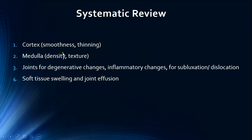Moving to the systematic review of the radiograph, we look at the following: first, we assess the cortex for smoothness and any thinning, as thinning can be seen in osteopenia. Then we look at the medulla for density and texture, which can be affected in various bone conditions. Then we look at the joint for any degenerative changes as in osteoarthritis, inflammatory changes as in rheumatoid arthritis, and any subluxation or dislocations. Finally, we look at the soft tissues for any swelling or joint effusion, both of which can indicate inflammation or bleeding.